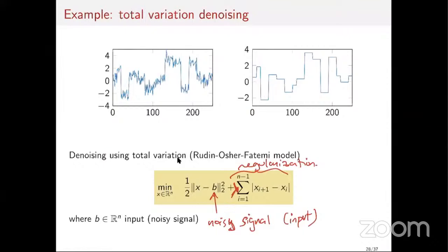The regularization term tells the optimizer that I would like to find a signal that is piecewise constant — I would like x not to change too much, and I would like to have pieces where the signal is constant, meaning xi+1 equals xi. I prefer a few sudden changes rather than many small changes. That is exactly what the L1 norm enforces — it imposes sparsity not on the vector x itself, but on the finite differences of x.